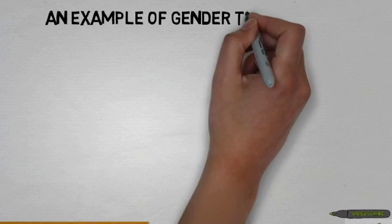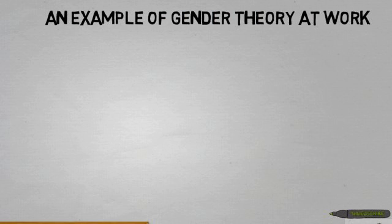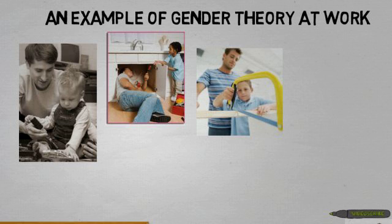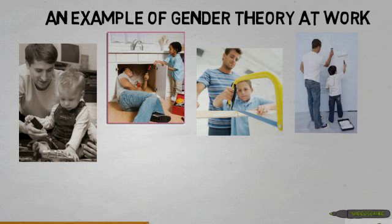Now let's take a look at an example of gender schema theory at work. A little boy watches his dad do all the repairs around the house. He observes his dad using tools to fix the sink, build an extra room, and paint the walls. Over time, the connection between his dad and construction becomes part of his schema.